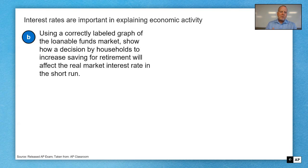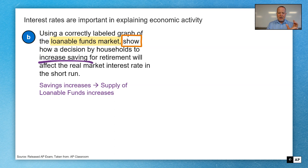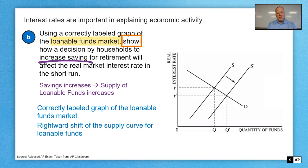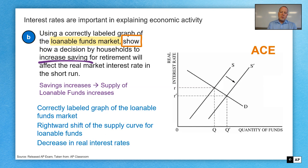Part B: using a correctly labeled graph of the loanable funds market, show how a decision by households to increase saving for retirement will affect the real market interest rate in the short run. Savings are on the supply curve — S for supply, S for savings. When we're in the loanable funds market, that's where loanable funds come from: savings. That's going to increase the supply of loanable funds. Always ACE your graphs. That increase in supply is going to cause real interest rates to fall, leading to lower interest rates.